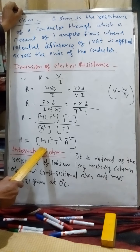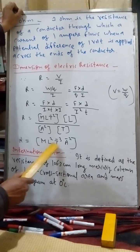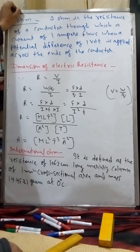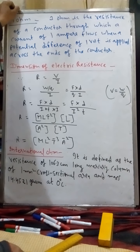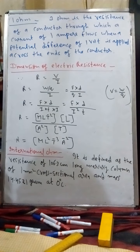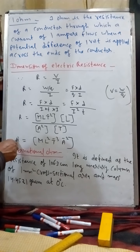The dimension of force is [MLT⁻²], displacement is [L], current is [A], and time is [T]. Putting it all together: the dimension of resistance = [ML²T⁻³A⁻²]. So the dimension of resistance is [ML²T⁻³A⁻²].